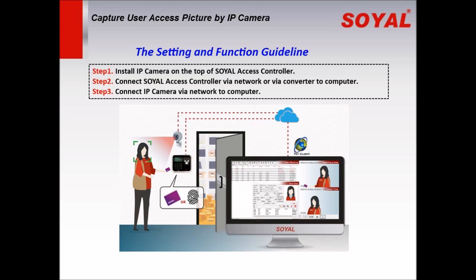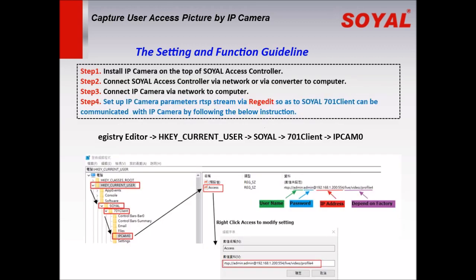The setting and function guideline. Step 1: Install the IP camera on the top of the Soya access controller. Step 2: Connect the Soya access controller via networking or via converter to the computer. Step 3: Connect the IP camera via network to the computer. Step 4: Set up the IP camera parameters so that Soya 701 software can communicate with the IP camera, by following the instructions below.